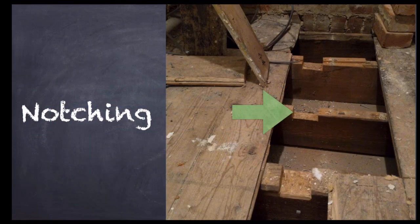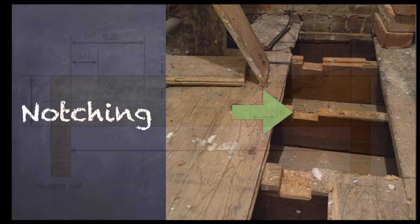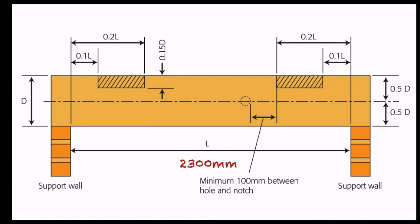Here's an example of notching in joists — we'll now discuss the rules about what you can and can't do. For this exercise, we'll say that the length or span is 2300 millimeters. Please get used to measuring everything in millimeters — it makes life much easier. So the length is 2300 millimeters and the depth of the joist is 600 millimeters. That's what we'll use throughout this exercise.